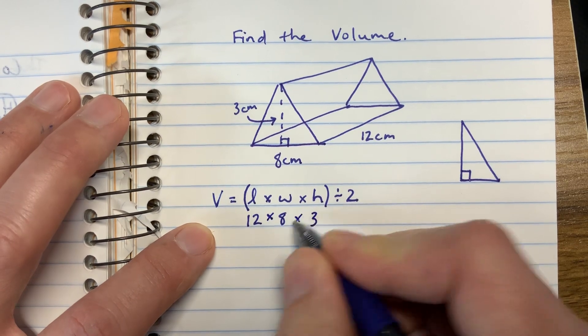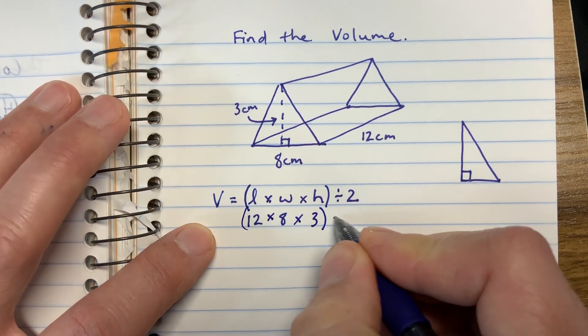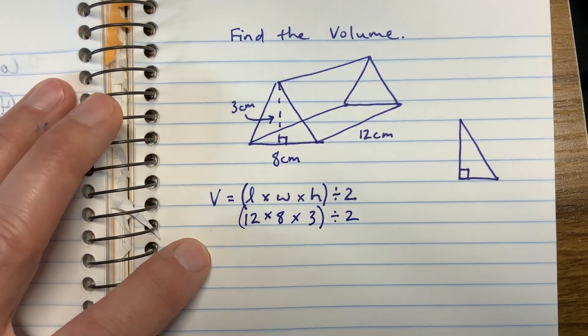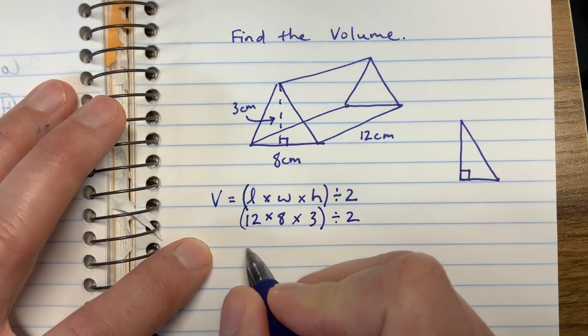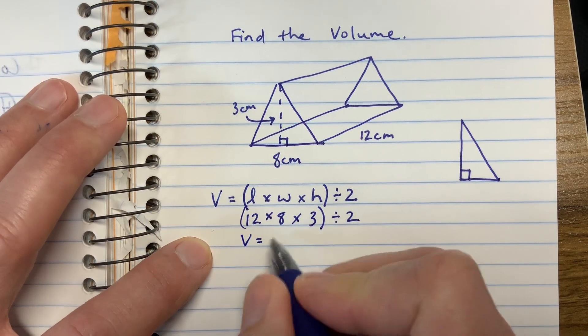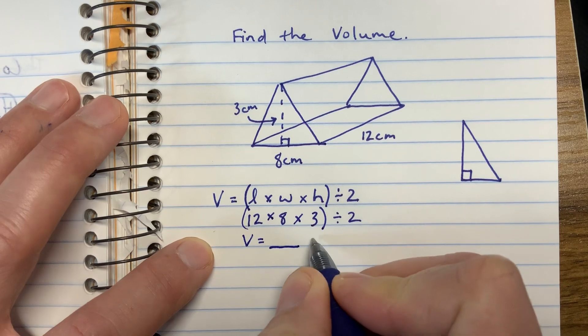So we're going to do 12 times 8 times 3, and then divide that information by 2. And that will give you the volume. And please remember volume is cubed.